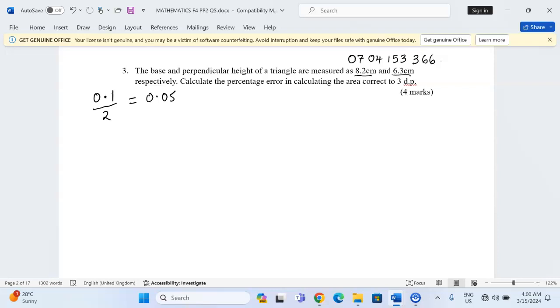So this means for us to get the limits of recording the base, we need to take 8.2 and add and subtract 0.05. So this means the base is ranging from 8.15 centimeters up to 8.25 centimeters.